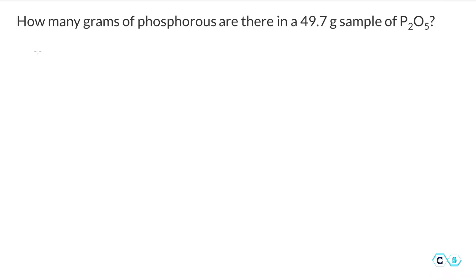In this problem we need to find how many grams of phosphorus we have in 49.7 grams of the phosphorus oxide. This is a slightly different problem compared to what we have been doing before where we're trying to find the percentages of the element in the molecule, while here we need to find how many grams of that element, in this case phosphorus, we have in the specific amount of the sample.